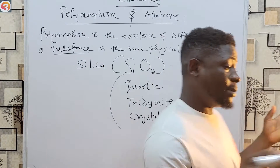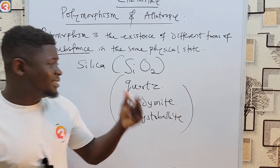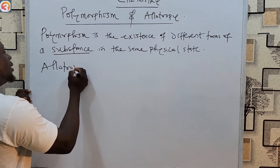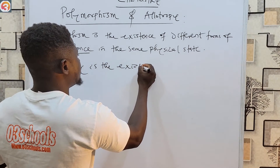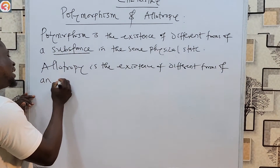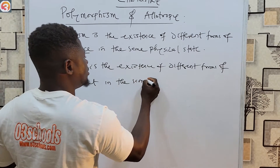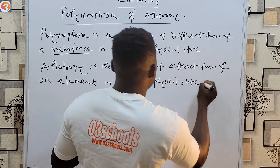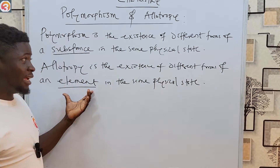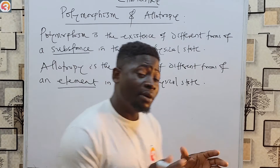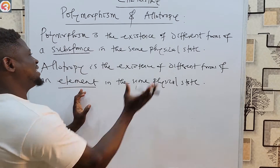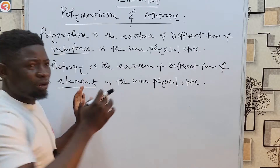For allotropy, on the other hand, allotropy is the existence of different forms of an element in the same physical state. For allotropy we talk about an element, whereas polymorphism talks about a substance. As seen in the silica example, silica is not an element but a compound. This means allotropy is inside polymorphism — polymorphism is an umbrella term that includes allotropy.